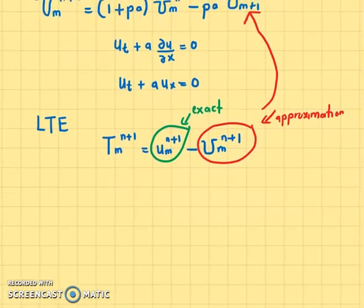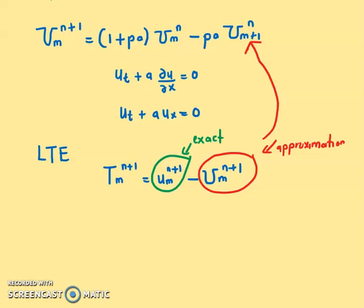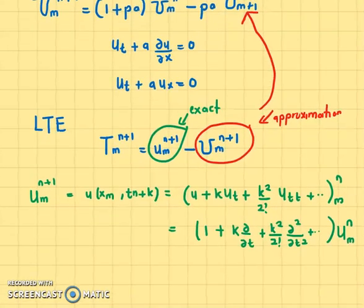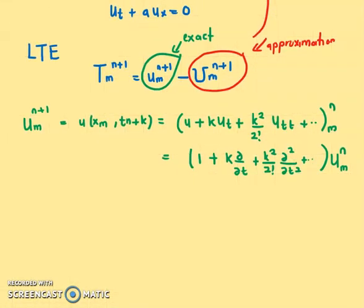First, we want to find the Taylor series expansion for the exact solution. U(m, n+1), which is U(x_m, t_n + k), expanded in a Taylor series gives: U plus k*Ut plus k²/2! * Utt, and so on, evaluated at (m,n). This can also be written using partial derivative notation. Both notations are equivalent, so don't get confused.